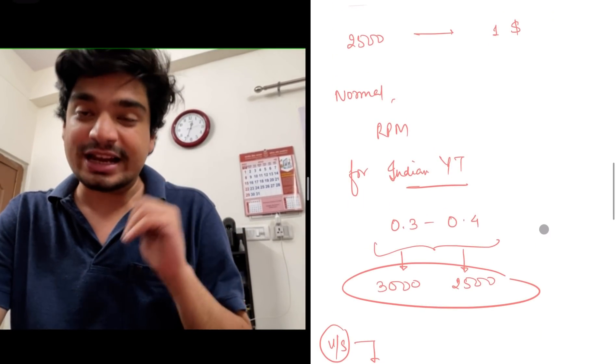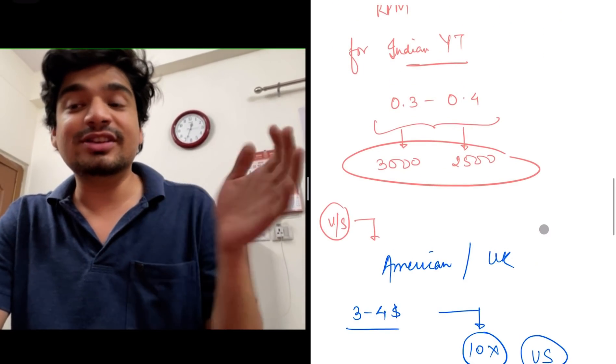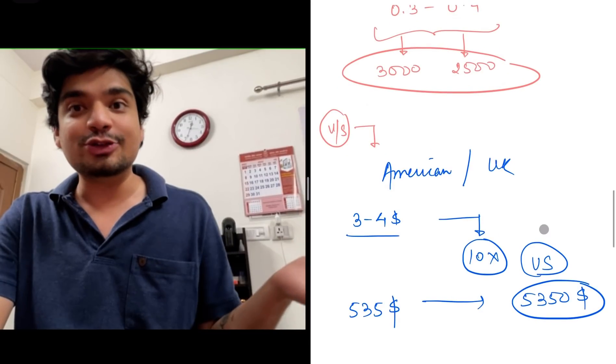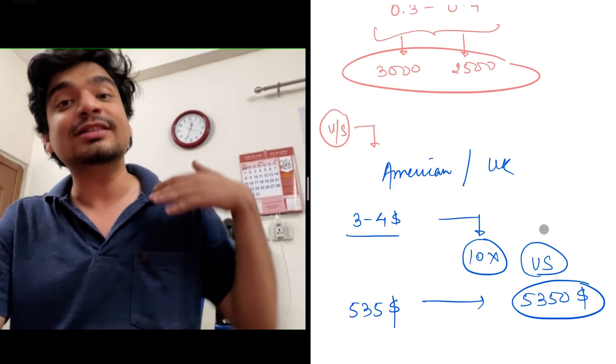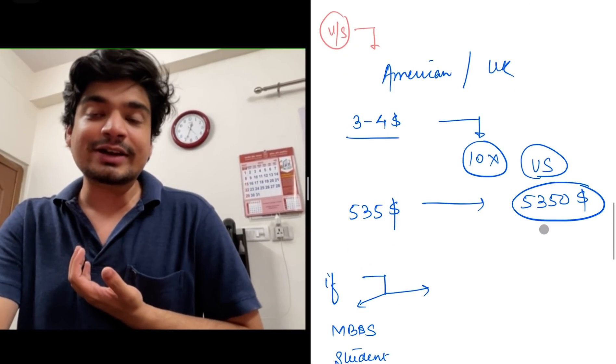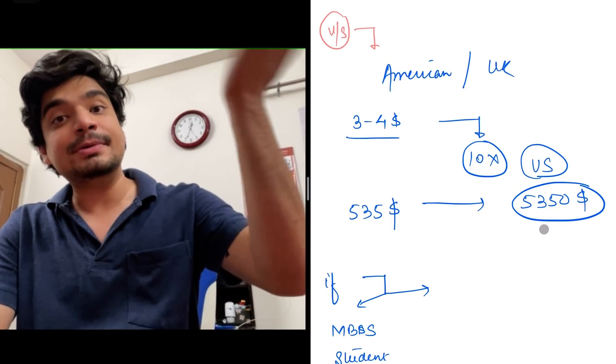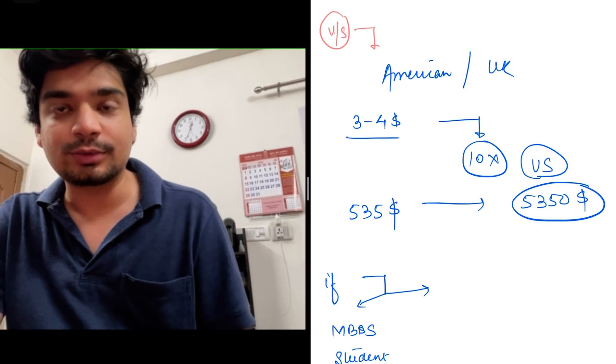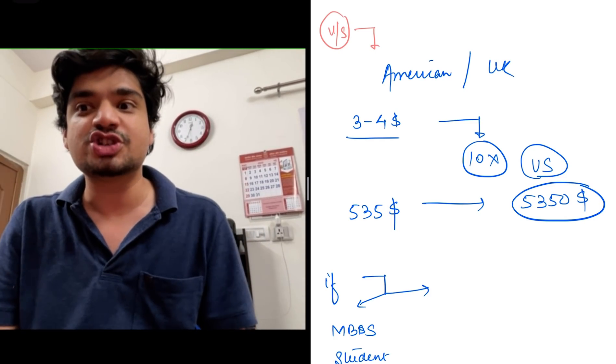This is the normal rate per mille for an average Indian YouTuber versus someone who's an American or a UK YouTuber. They get actually $3 to $4 or sometimes even more, $7 to $8 also. So I'm earning $535 in a month right now. They might be earning $5,000 or $6,000 from YouTube, which is a good substantial chunk.